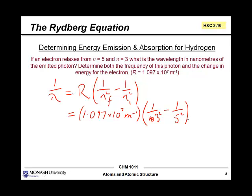Sub your values into the equation, plug this into your calculator and you should get a value something like this: 7.80 times 10 to the power of 5 meters to the minus 1.